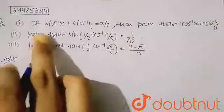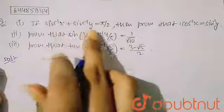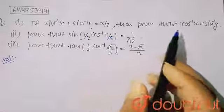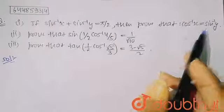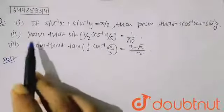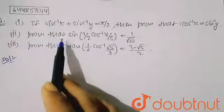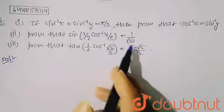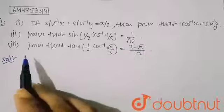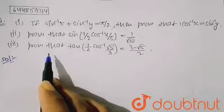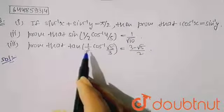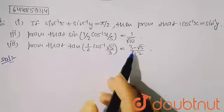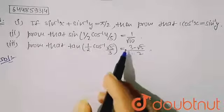In this question, it is given that: Part 1 — if sin⁻¹x + sin⁻¹y = π/2, prove that cos⁻¹x = sin⁻¹y. Part 2 — prove that sin(½ cos⁻¹(4/5)) = 1/√10. Part 3 — prove that tan(½ cos⁻¹(√5/3)) = (3 − √5)/2.